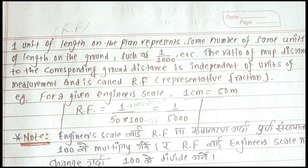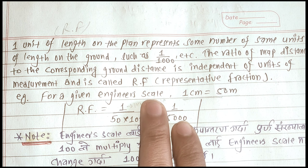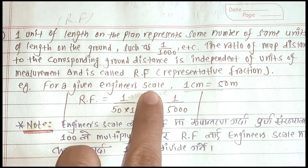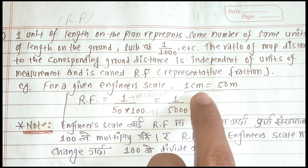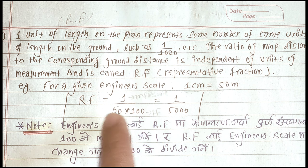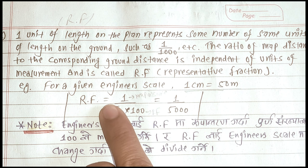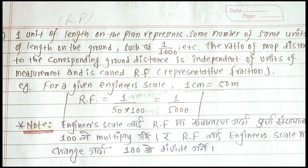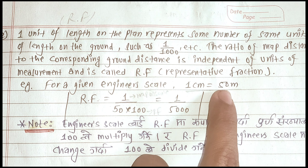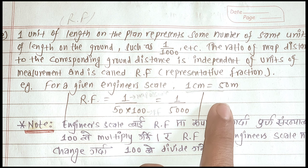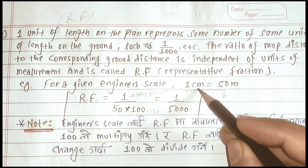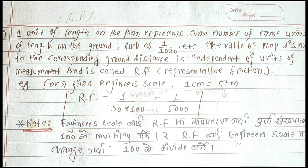Now let's use an example. This is an engineer's scale: 1 centimeter equals 50 meters. To convert this to a representative fraction, 1 centimeter on paper equals 50 meters on the ground. We convert both to the same units to get the RF.